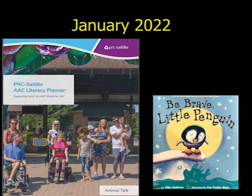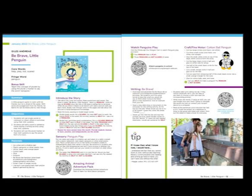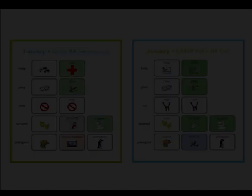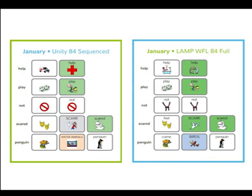PRC Saltillo is proud to present our 2022 AAC Literacy Planner Animal Talk. January's story is called Be Brave Little Penguin. You will find the lesson plan with everything you need to support reading the story. Smart charts of the target words for Unity 84 Sequenced and Lamp Words for Life Full are included for communication partners. Find these words on your communication device as you read the story and talk with your communicator. Make sure to pause the video so you can talk about what's going on in the story.